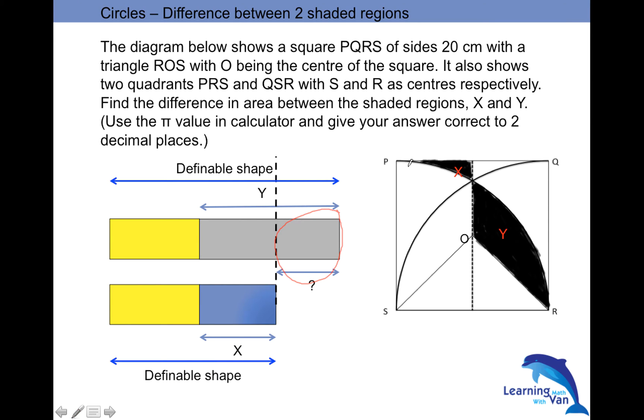If you see that, if I were to shade this portion. Do you see that? Does X plus the shaded portion, the yellow shaded portion give you a rectangle, right?